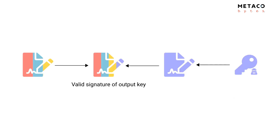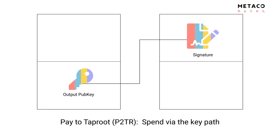So to get a valid signature under the output key: you already have the aggregated signature under the internal key, and once you have the script private key you create one more signature, then you aggregate those two signatures together — giving you a valid signature under the output key. When spending via the key path, all that appears on the blockchain is one public key in the output and one signature. Alice, Bob, Carol, and the script key are all aggregated, and the last key can be calculated by all peers.